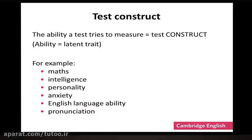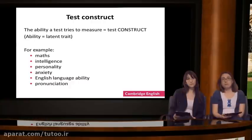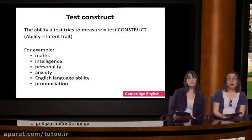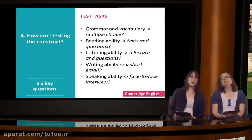Some examples of constructs are: knowledge of mathematics, intelligence, personality, anxiety, English language ability, and pronunciation. There are different ways that a construct may be measured. For example, if we want to test personality, we might use a multiple choice questionnaire, or we might use observations of somebody. When we want to measure anxiety, we might give questionnaires, or we might measure someone's pulse rate. But even if we don't use formal tests for some constructs, we still have to understand how we can measure those constructs.